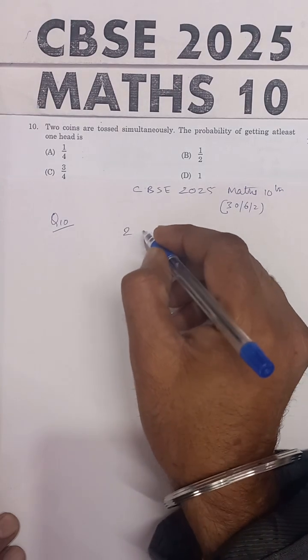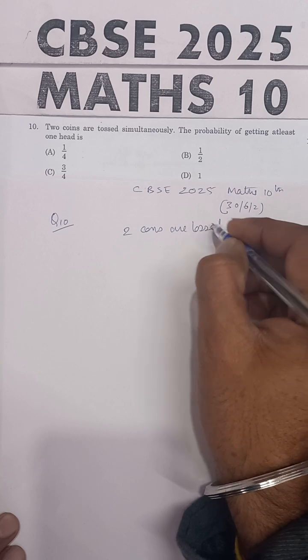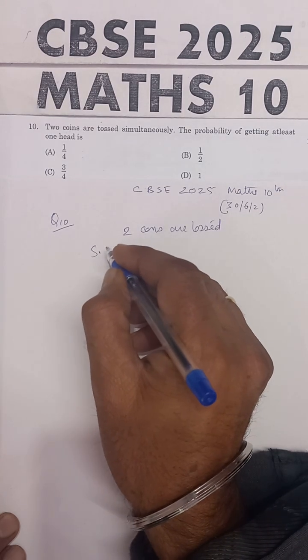What does it mean? Two coins are tossed. The sample space is the list of all possibilities.